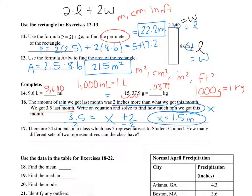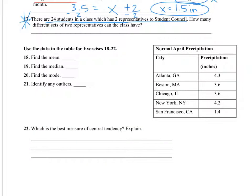And then 17. There are 24 students in a class, which has 2 representatives to student council. How many different sets of 2 representatives can the class have? We're going to cross this out because we didn't do this one. This is 3.8. We didn't do that lesson.